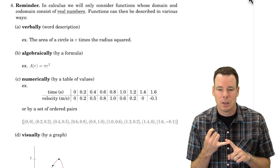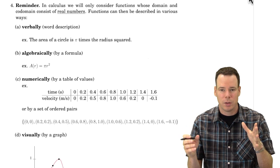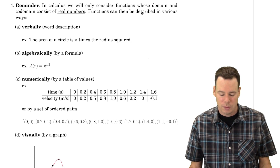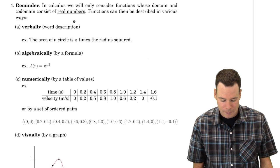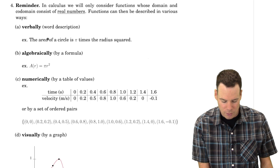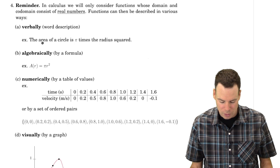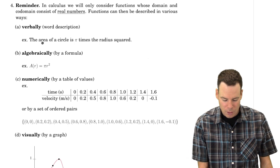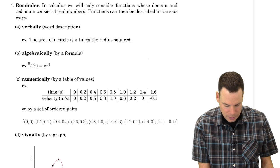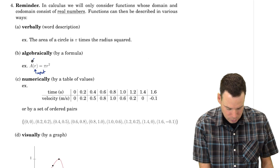In calculus, our functions will always have a domain that is a subset of the real numbers and a co-domain that is also a subset of the real numbers — so we're always looking at functions from real numbers to real numbers. There are really four ways to describe such a function. You can describe it verbally — for example: the area of a circle is π times the radius squared. Here we've defined an area function where the input is the radius and the output is the corresponding area.